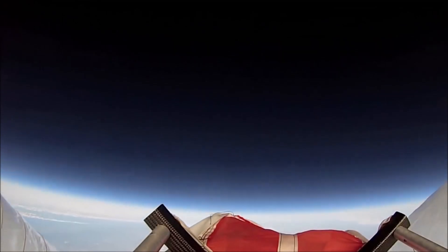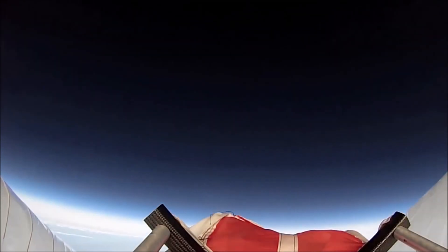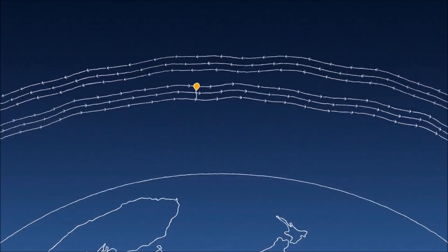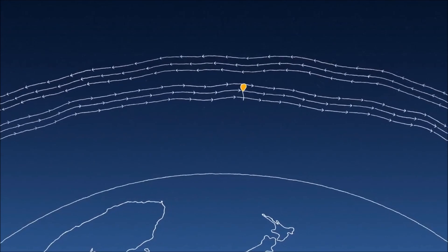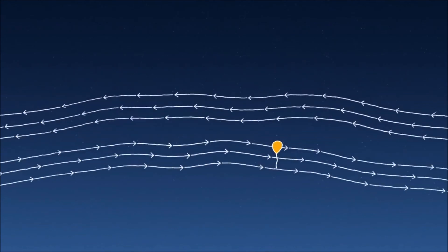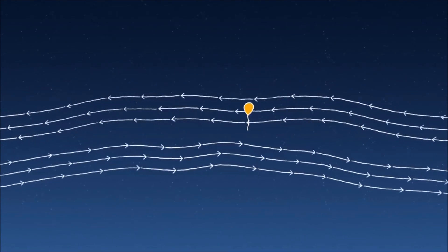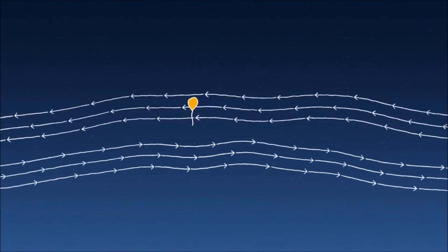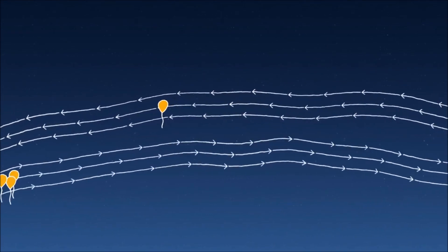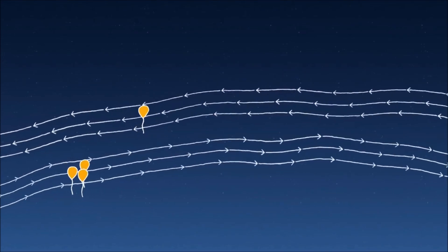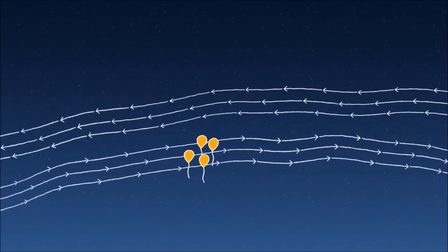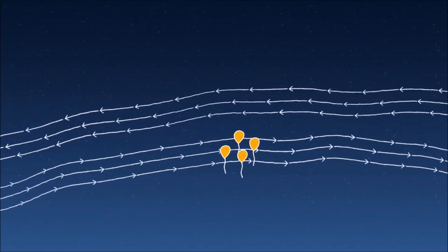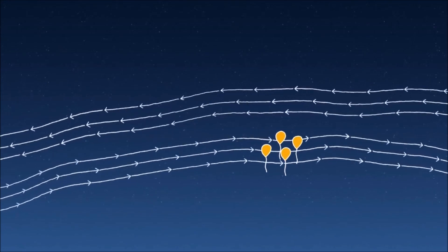The stratosphere is different because we tend to have layers of wind that go in very particular directions. And by moving up and down through these different layers, we can steer. So by catching the right wind, we can keep the balloons together enough to get good coverage on the ground. We can sail with the winds.